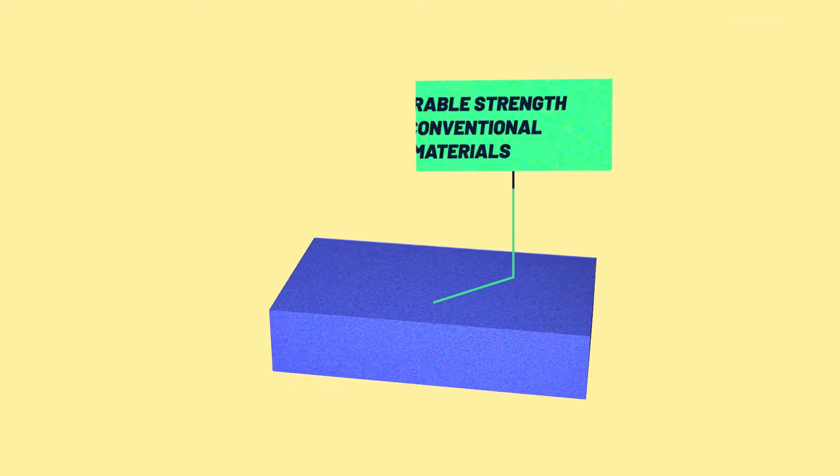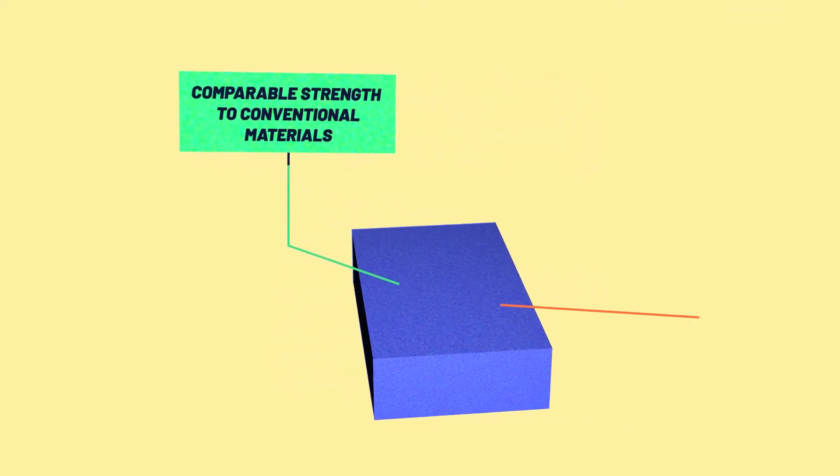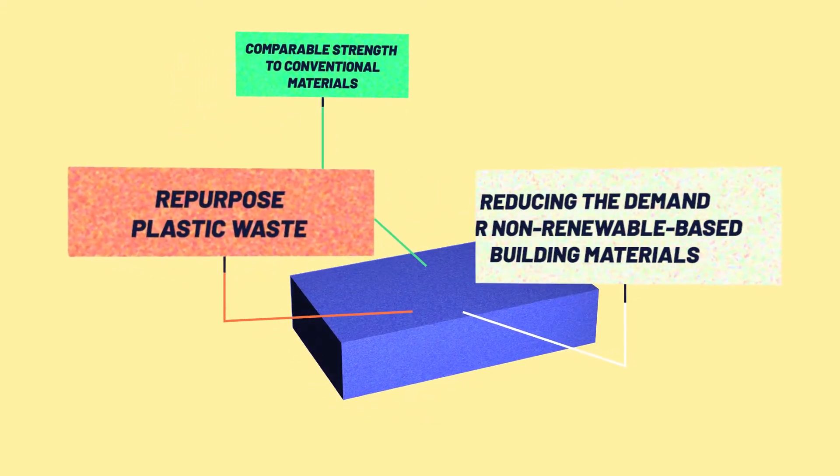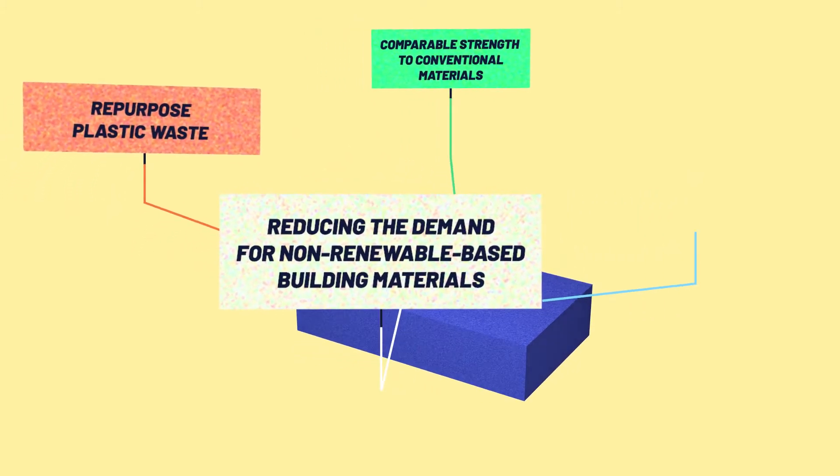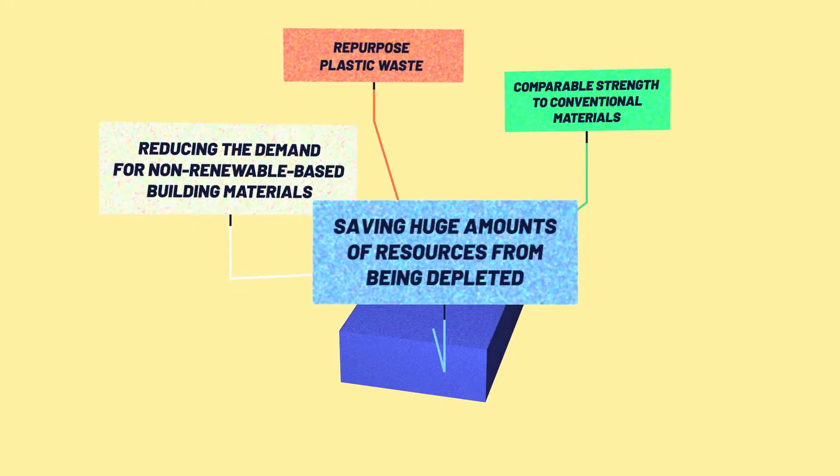They're aiming to produce building materials of comparable strength to conventional materials. This has the potential to simultaneously repurpose plastic waste, while reducing the demand for non-renewable-based building materials, saving huge amounts of resources from being depleted.